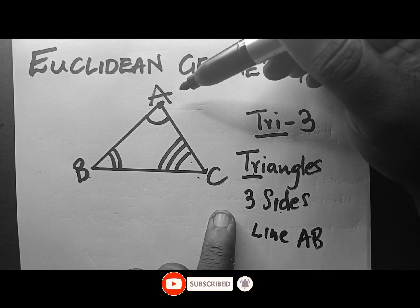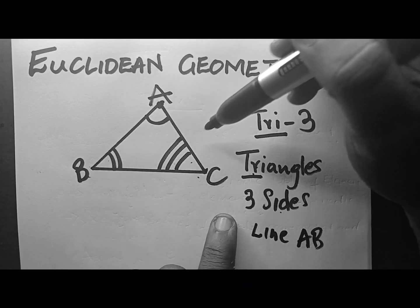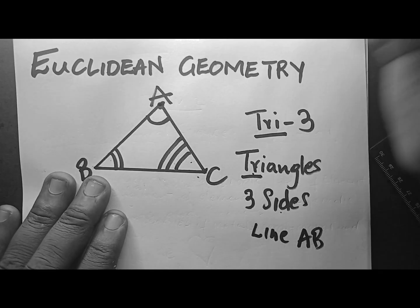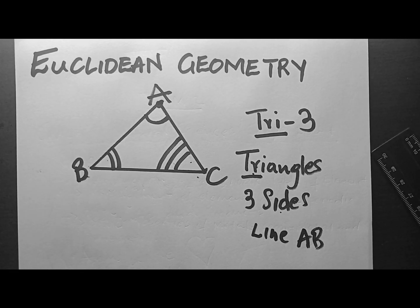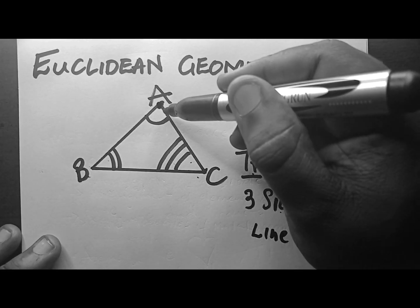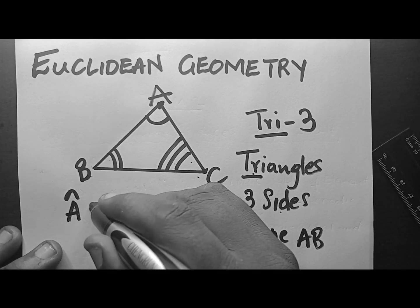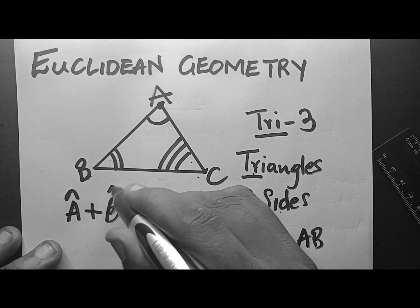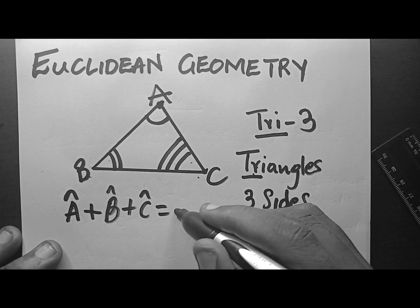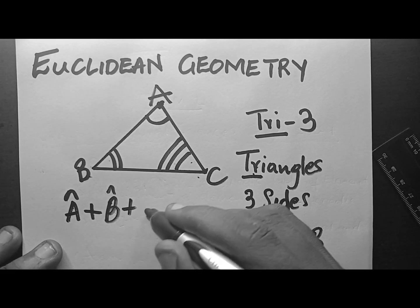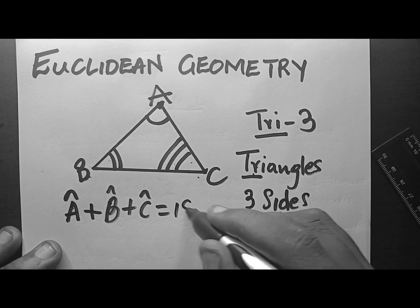You must get used to that language, because they will say AC is equal to AB, and you must know they mean from here to here is the same as from here to here. Now, let's go to the basics of triangles. The basic rule: angle A plus angle B plus angle C will always give you 180. As angle A plus angle B plus angle C will always give you 180.